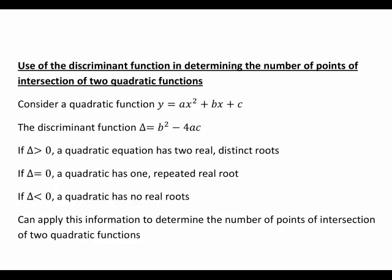Consider a quadratic function y equals ax squared plus bx plus c. The discriminant function delta equals b squared minus 4ac.